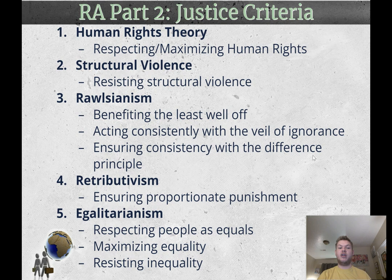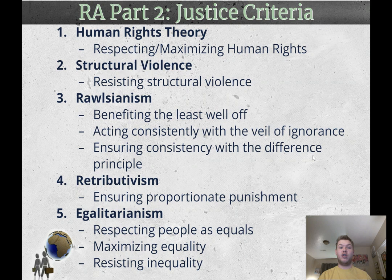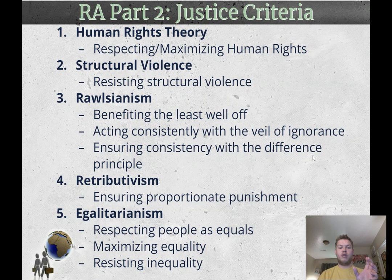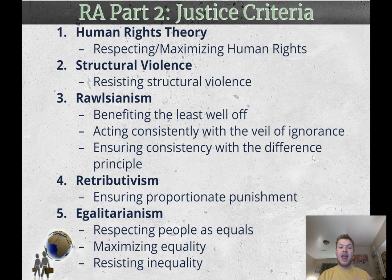The reason you want to get your criterion from philosophy is, one, that's what many traditional judges expect, and two, philosophy explains important concepts and tells us what we care about. When you use philosophy to justify your criterion, you have a much better shot at proving it's better than a simple cost-benefit analysis. Also, phrase your criterion as an action — 'respecting,' 'maximizing,' 'minimizing,' 'ensuring' — rather than just saying 'my criterion is retributivism,' because that doesn't give the judge anything actionable. If the judge knows to vote for the team that ensures proportionate punishment, their decision becomes much easier.